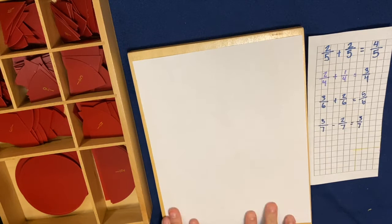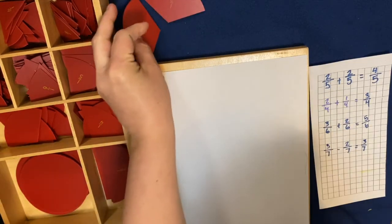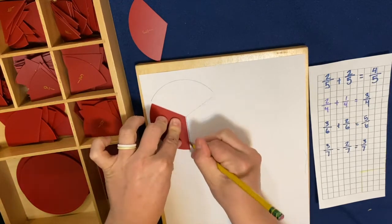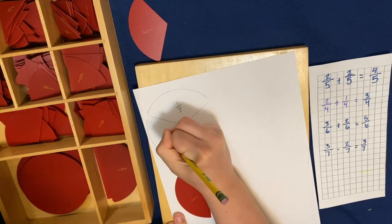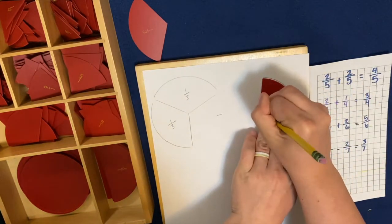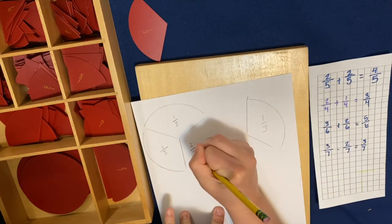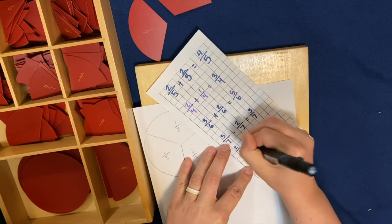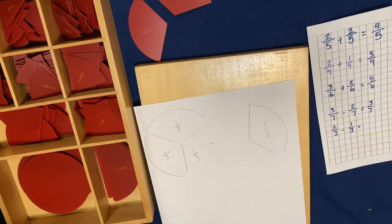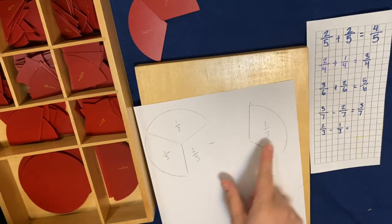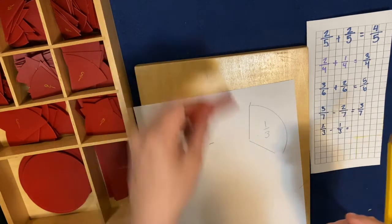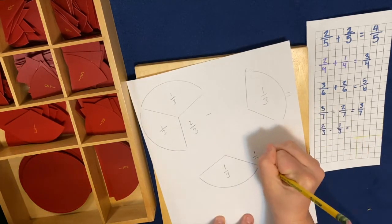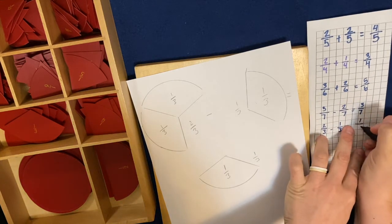Let's do another one. If I wanted to do two-thirds minus one-third. Let's write it on our paper. If I took one-third away from here, because that's what we're supposed to take away, how many thirds do we have left? We just have one. So this equals one-third.